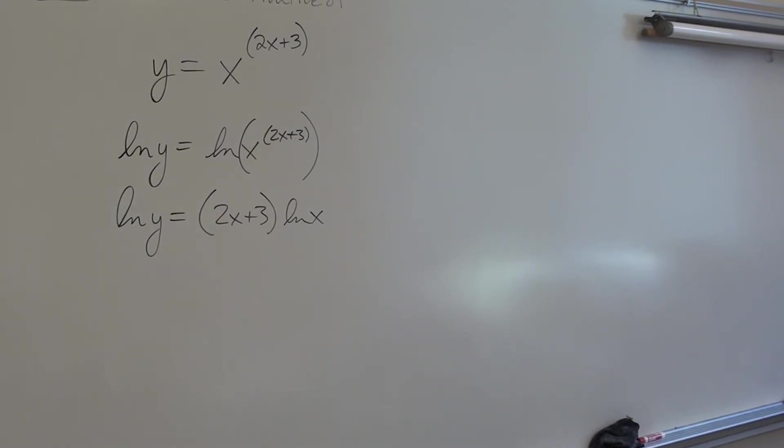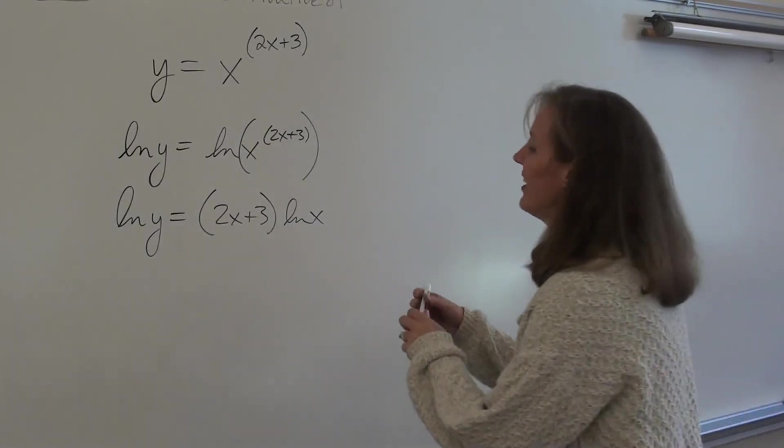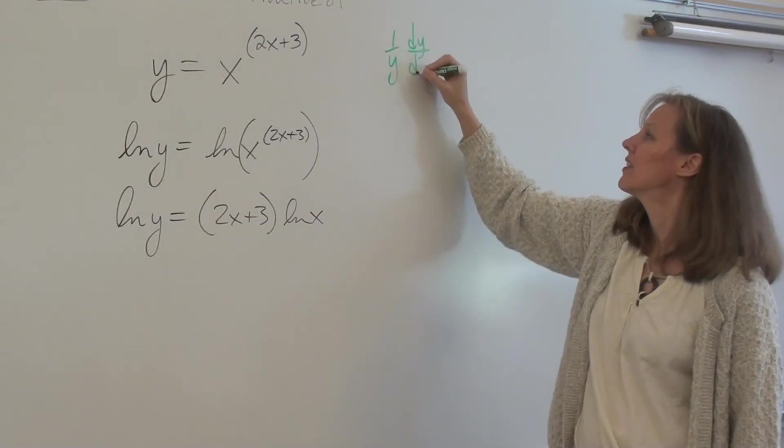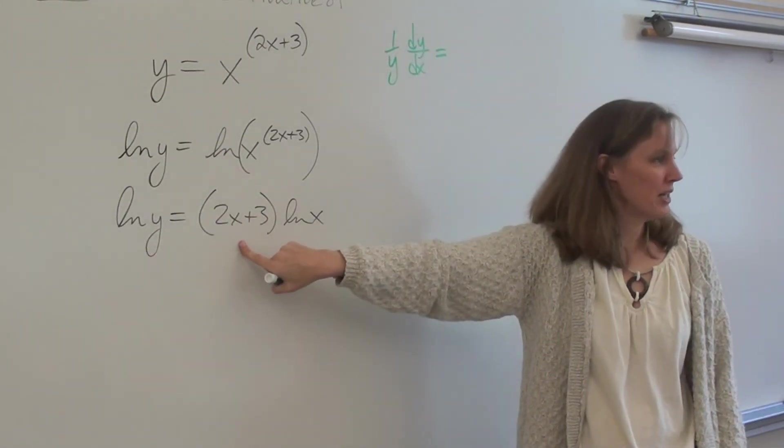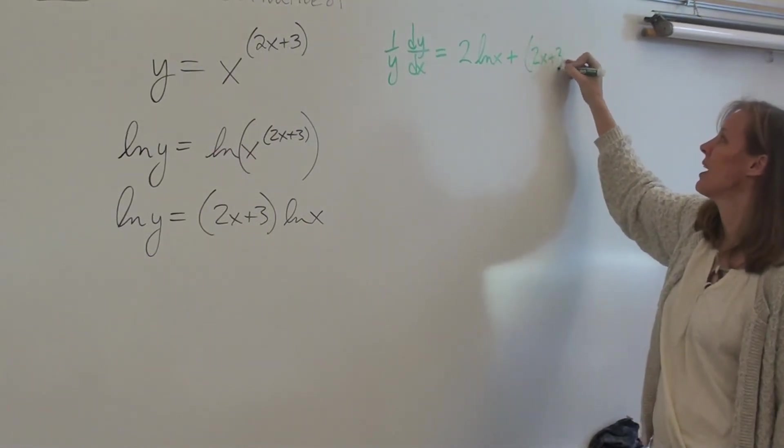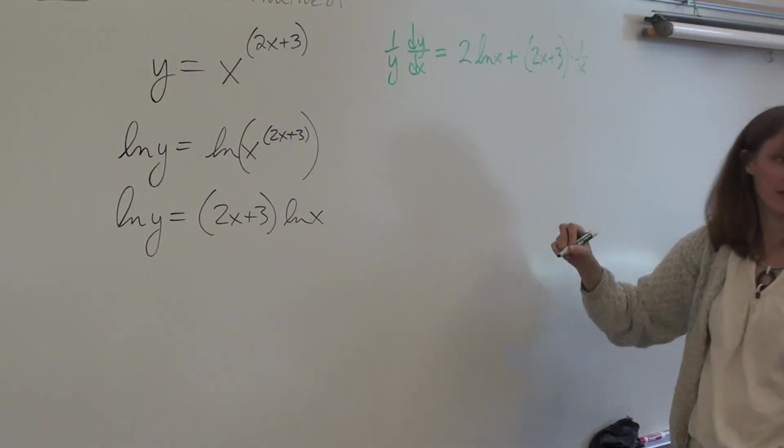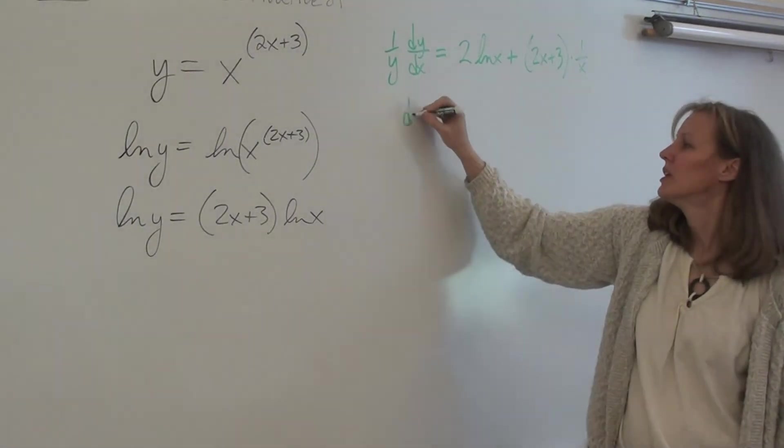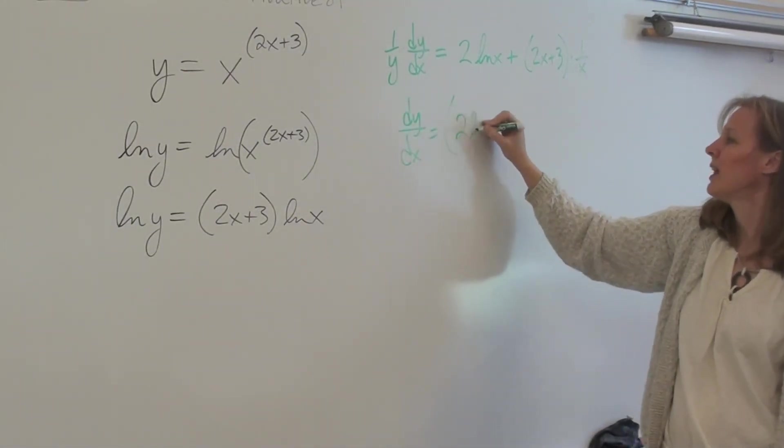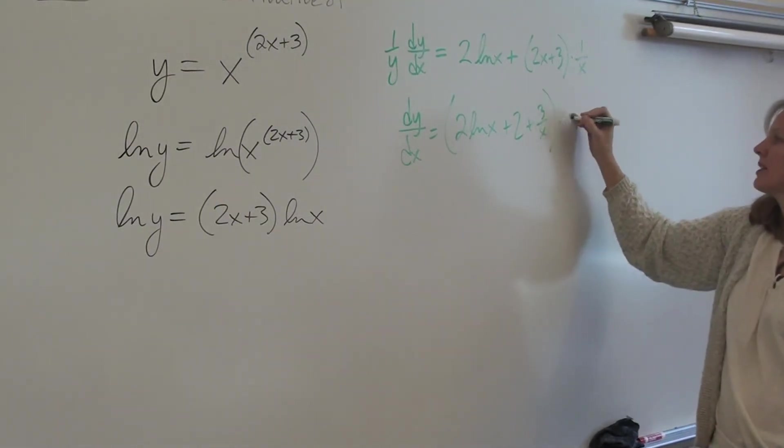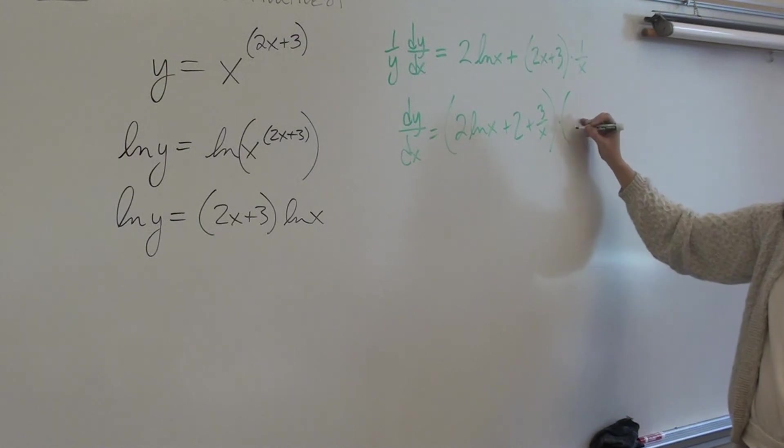What's the derivative of ln y? 1 over y dy/dx. Derivative of 2x plus 3 is 2. 2 times ln x plus 2x plus 3 times what's the derivative of ln x? 1 over x. Simple product rule. So now dy/dx is, so we have 2 ln x. I'm just going to distribute the 1 over x in, so plus 2 plus 3 over x, all times y. And what is y? x to the 2x plus 3. Done.